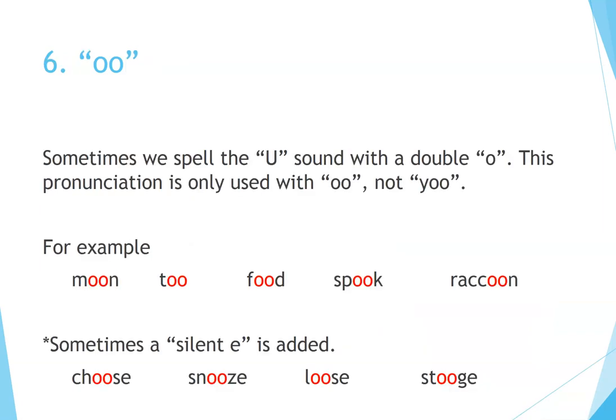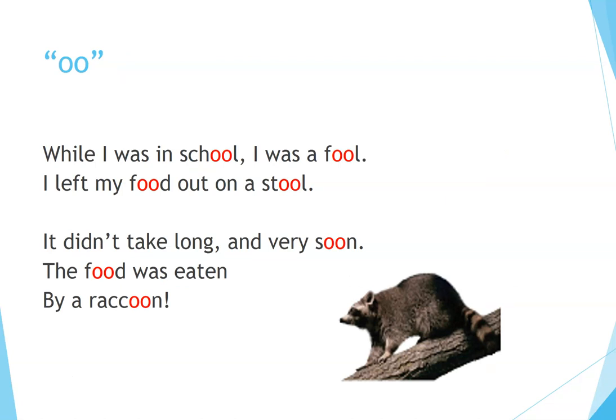Number 6: OO. Sometimes we spell the OO sound with a double O. This pronunciation is only used with OO, not U. For example: moon, food, spook, raccoon. Sometimes a silent E is added: choose, snooze, loose, stooge. Double O poem: When I was in school, I was a fool. I left my food out on a stool. It didn't take long, and very soon, the food was eaten by a raccoon.